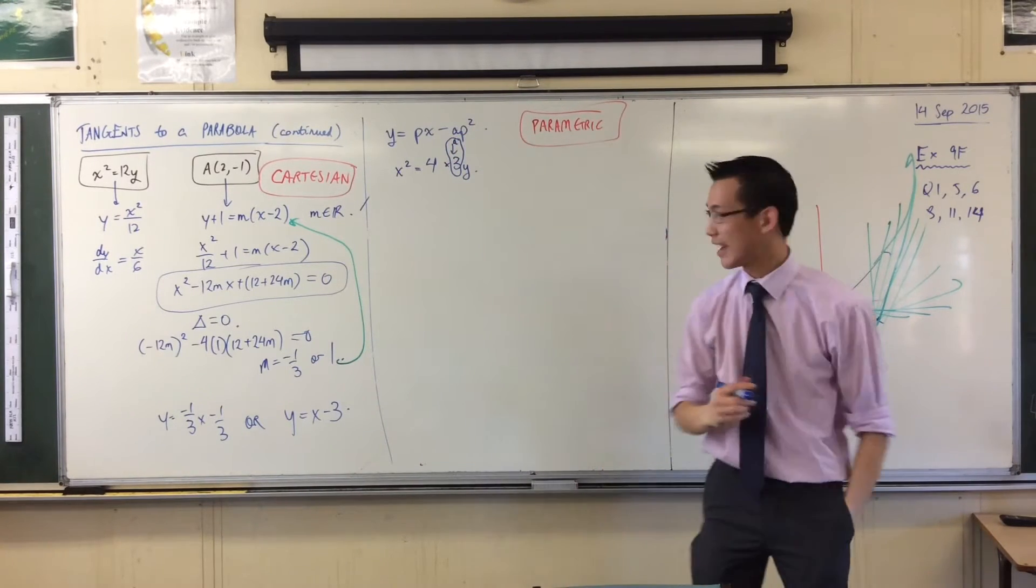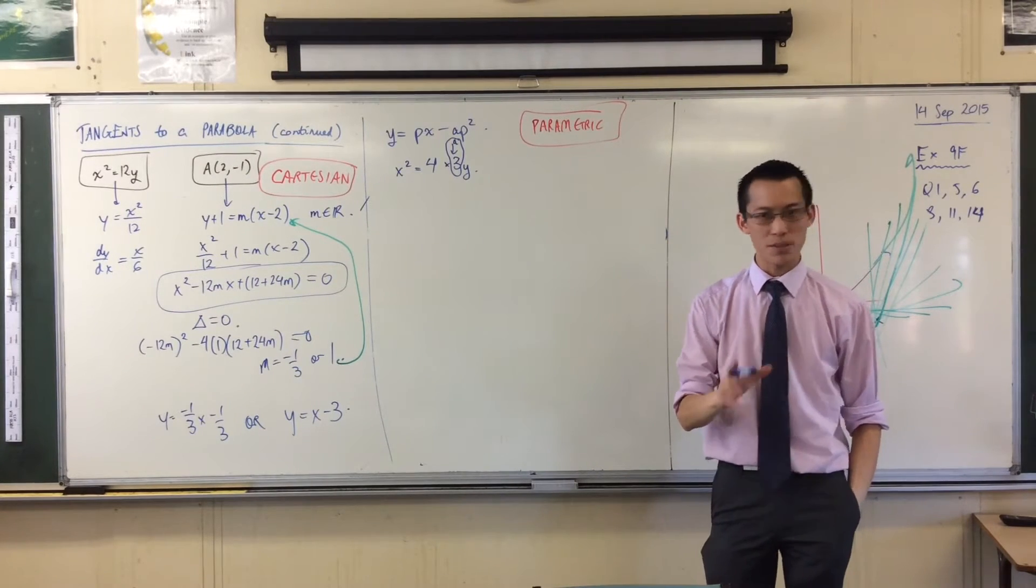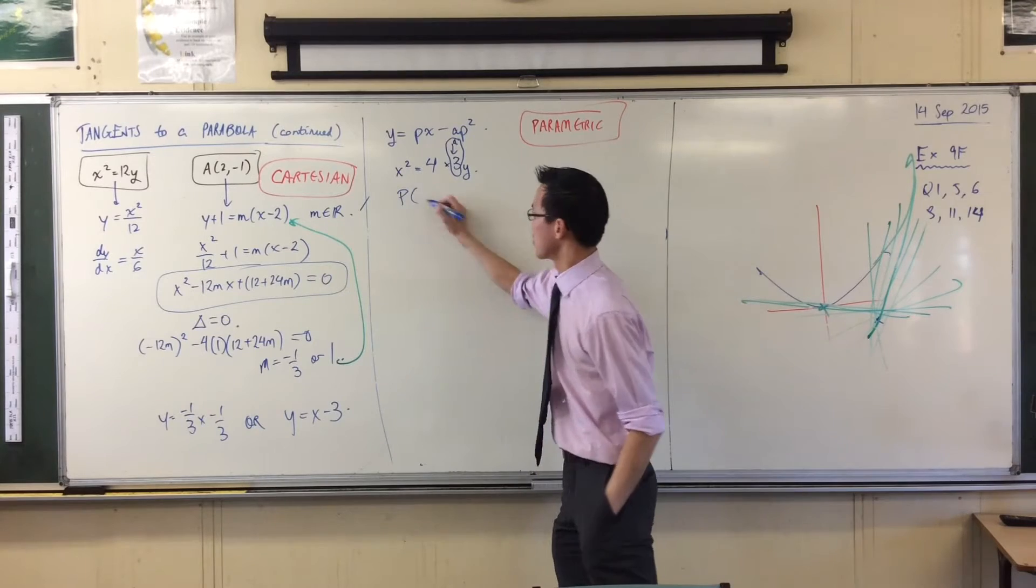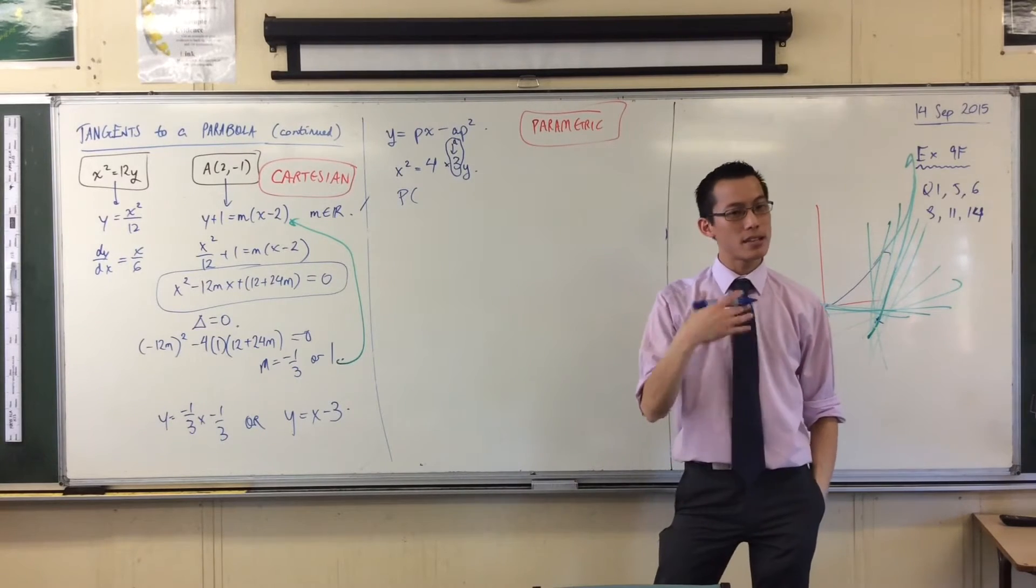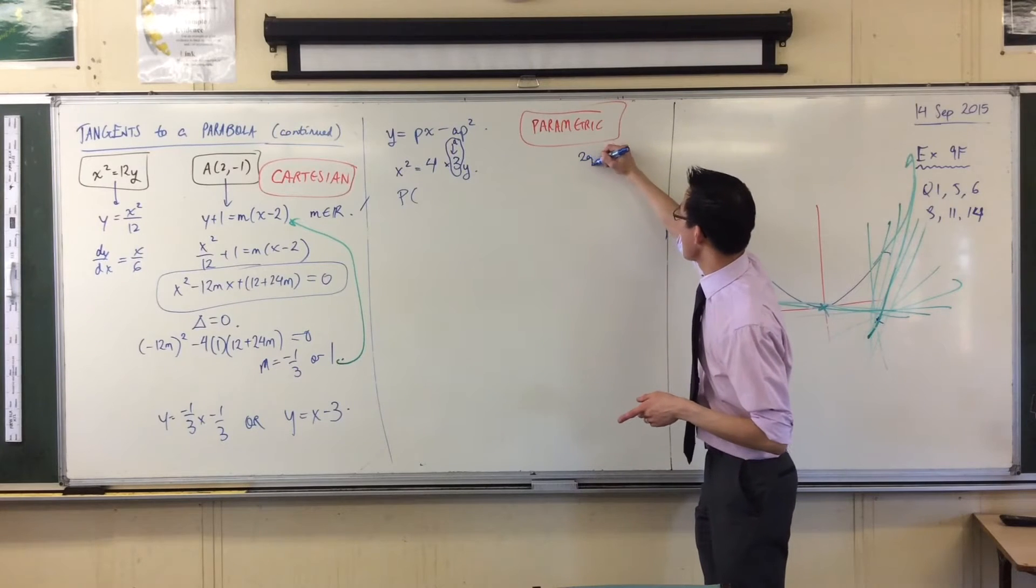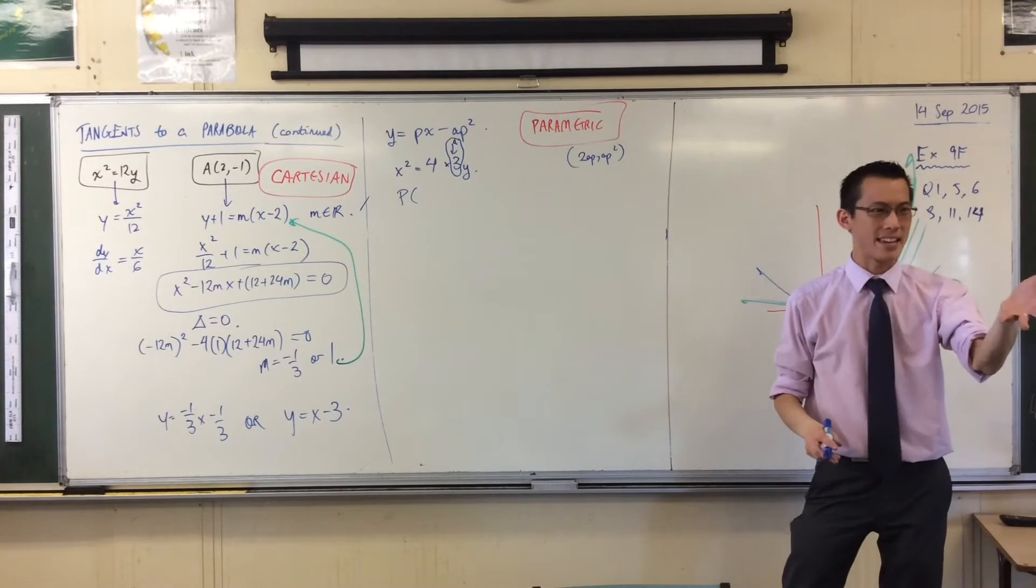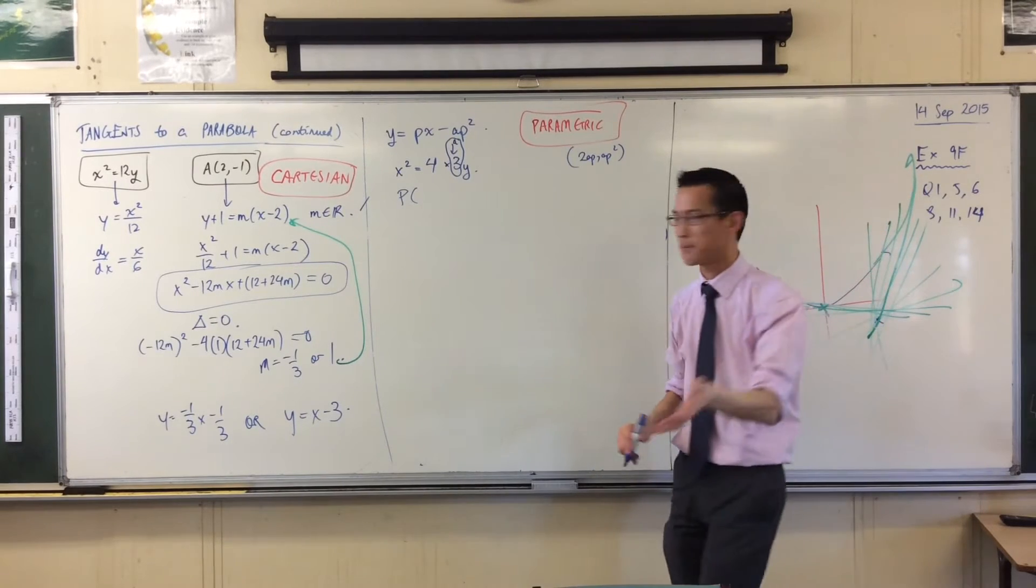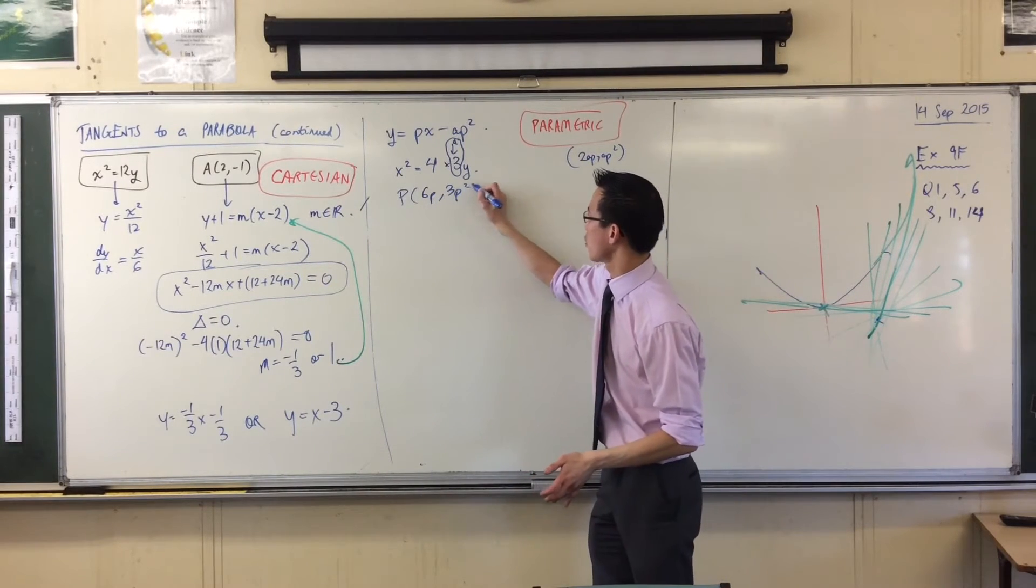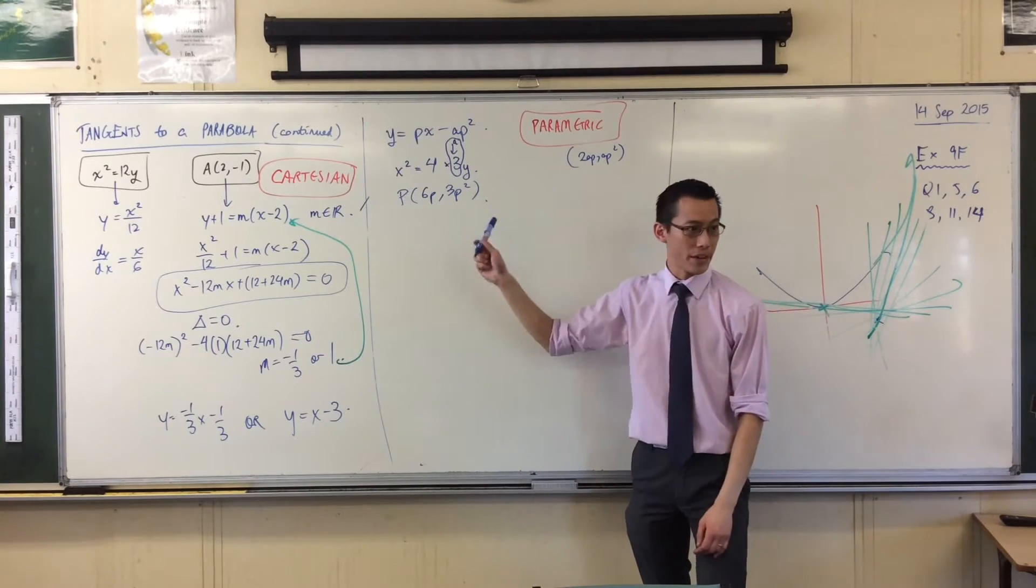So what am I going to do with that? Well, if a is equal to 3, then every point on this parabola, p, is in the same form. A is 3. We usually say 2ap, ap squared. Don't we? That's what we normally say. But I know what a is. So what form am I going to be in? 6p, 3p squared. Nailed it. So now I know what the coordinate of a point is.